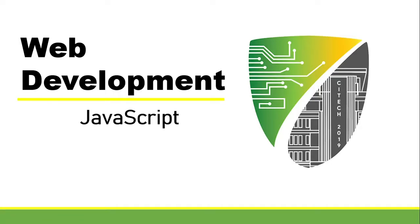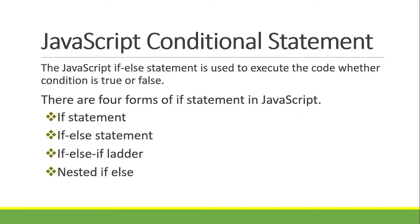Hello guys. For our topic in this video, we will talk about JavaScript conditional statements — the JavaScript if-else statement. It is used to execute code whether a condition is true or false. In JavaScript if-else statements, we are using boolean expressions. There are four forms of if statement in JavaScript: if, if-else, if-else-if ladder, and nested if-else.